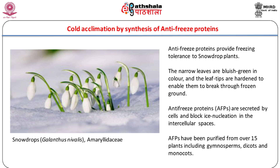This slide shows transgenic plants expressing a gene encoding an antifreeze protein. Transgenic plants have been developed from tomato, tobacco, and Arabidopsis, with gene origins from different organisms: fish synthetic winter flounder type 1 AFP fused with truncated Staphylococcus protein A; insect synthetic spruce budworm; a fire-colored beetle AFP; and carrot AFPs.